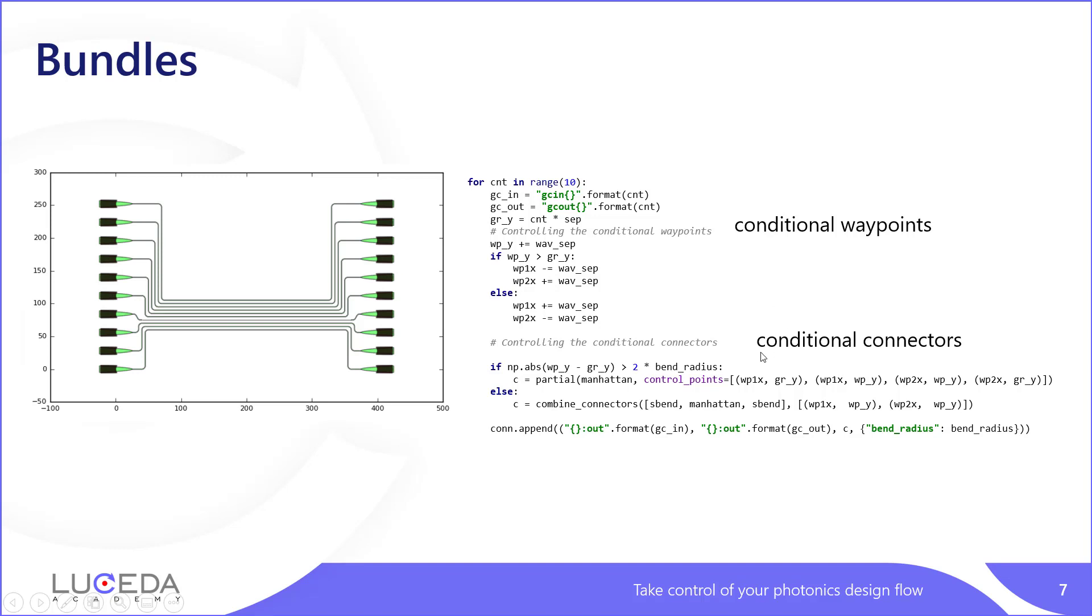This is fairly easy to do in Ipkis using conditional waypoints and conditional connectors, where we use the relative positioning of the waypoints to their individual input and output points to determine what to do. So in this case, we move the waypoints to the top left and top right and bottom right, depending on whether you are above this bus height or below.